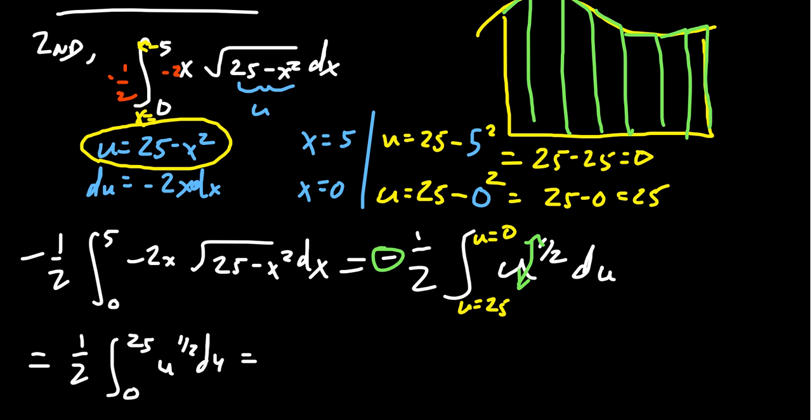You get one half the integral from 0 to 25 of u to the one half du. The antiderivative, similar to what we saw before, you raise the power by 1, giving you 3 halves. You multiply by 2 thirds. There was a one half in front, so when you take one half times 2 thirds, you end up with 1 third. Then you evaluate this from 0 to 25.